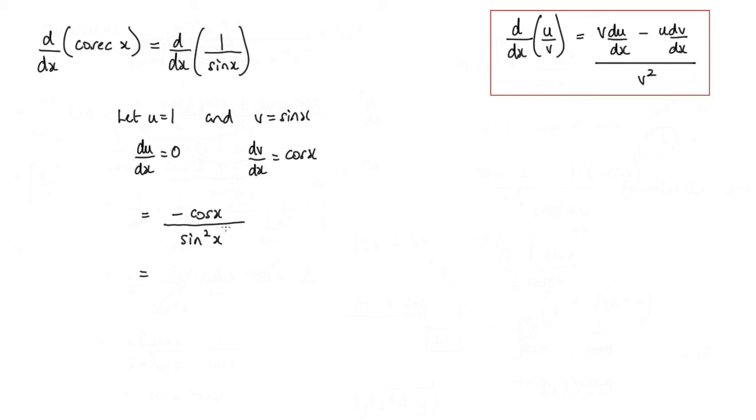Now I can actually split this a little bit. I can write this as negative cos x over sin x. That will be multiplied by 1 over sin x.